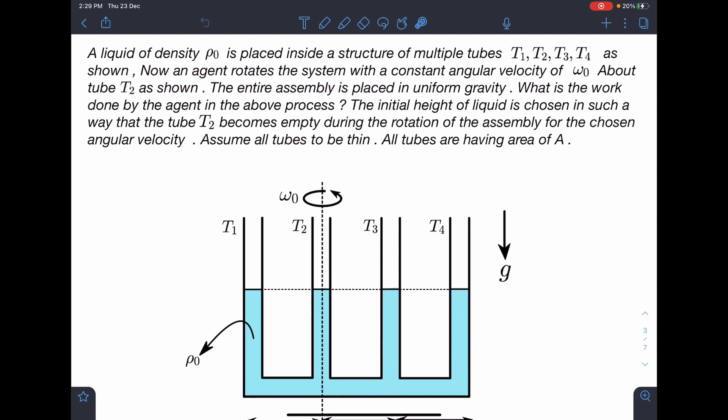What is the work done by the agent in the above process? The initial height of the liquid is chosen in such a way that the tube T2 becomes empty during the rotation of the assembly for the chosen angular velocity. Assume all tubes to be thin and all tubes are having uniform cross-sectional area of A.